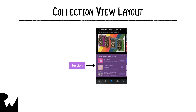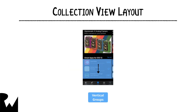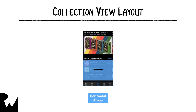Let's pull up one of those collection view examples you saw earlier. Here's a section of the App Store on iOS. Each of the sections shown here would be defined in the layout object as a section. A section is comprised of groups. In this layout, we have two groups: one that lays the items out vertically, and another that groups them into a horizontal container. Finally, inside each vertical group are the items.